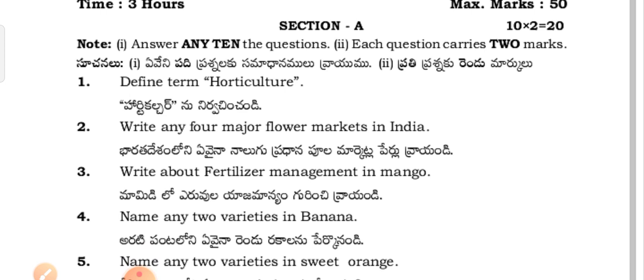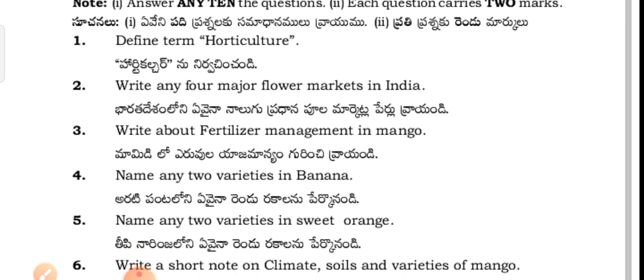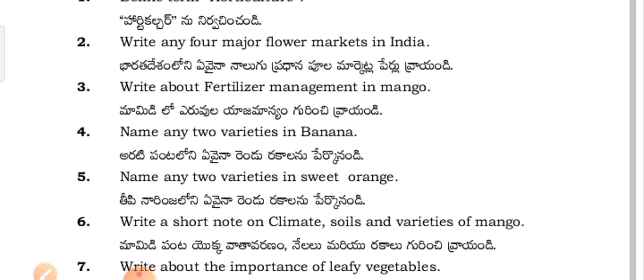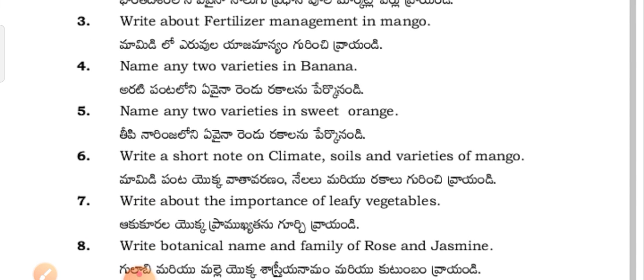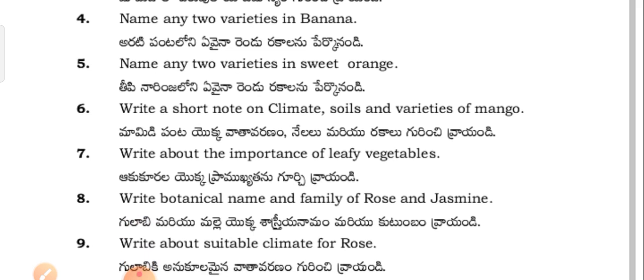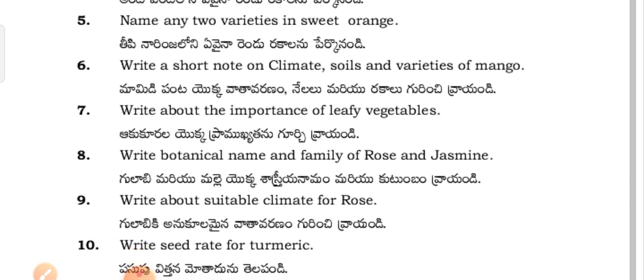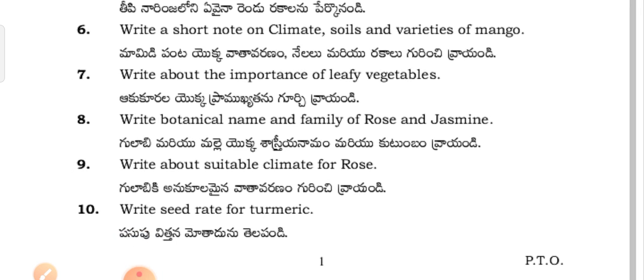Section A. Define the term Horticulture. Write any four major flower markets in India. Write a short note on climate, soils, and varieties of mango.